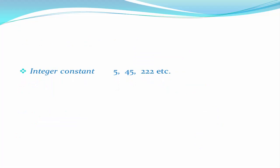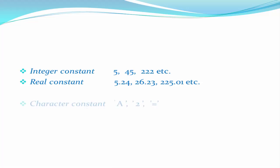An integer constant is a whole number — for example, 5, 45, 222, etc. An integer constant does not have any decimal point. A real constant is a number with a decimal point — for example, 5.24, 26.23, 225.01, etc.